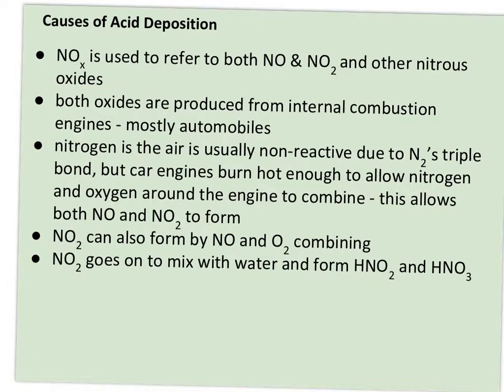The nitrous oxides — the two big ones — are NO and NO2, though there are others like NO3. Both NO and NO2 come from internal combustion engines, which power our automobiles. Automobiles are by far the biggest contributors of nitrous oxides. The reason it's a problem is that nitrogen in the air is normally nonreactive due to nitrogen's triple bond, but car engines are hot enough to drive this endothermic reaction. The hot exhaust coming out the tailpipe heats the surrounding air enough to make NO and NO2 form — it's not the engine itself, but the heat interacting with the nitrogen and oxygen in the surrounding air.